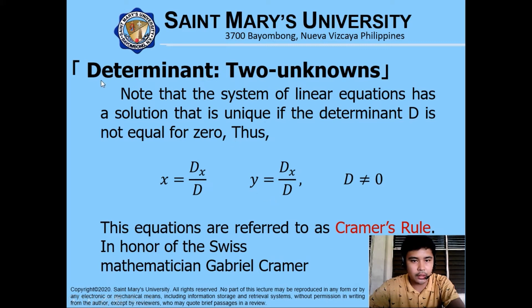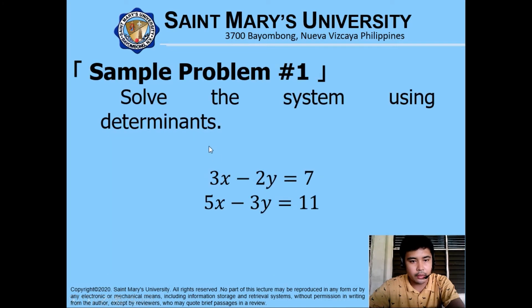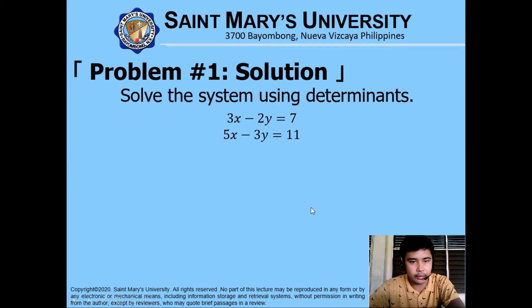Finding solutions in determinant form is also referred to as Cramer's rule, named after Swiss mathematician Gabriel Cramer. Let us solve sample problem number one: given two simultaneous equations with two unknowns, 3x minus 2y equals 7 and 5x minus 3y equals 11.